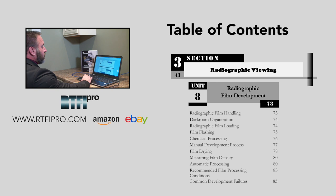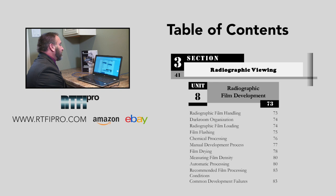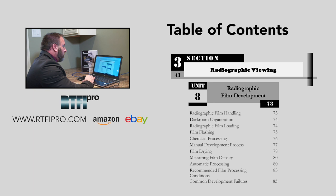Unit eight covers radiographic film development — teaching you how to develop film. Topics include radiographic film handling, dark room organization, radiographic film loading, film flashing, chemical processing, manual development process, film drying, measuring film density, automatic processing, recommended film processing, and common development failures.